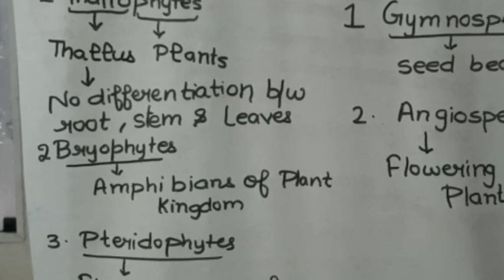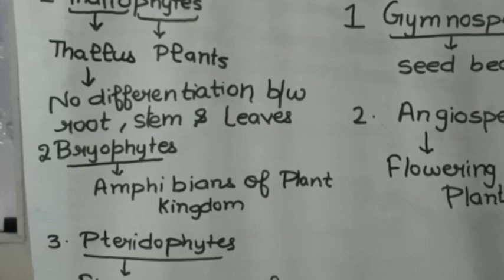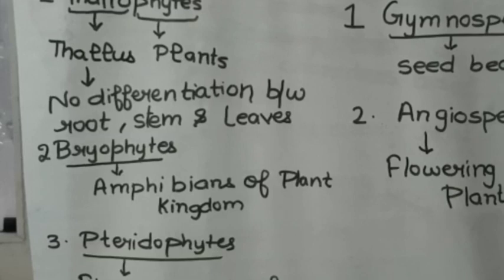Next is Bryophytes. We call Bryophytes the amphibians of the Plant Kingdom because they need both terrestrial and aquatic conditions. Amphi means both.